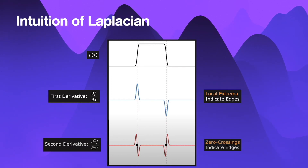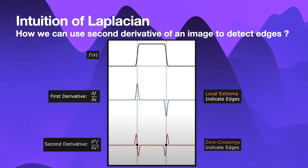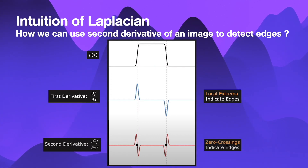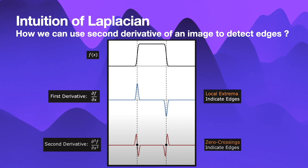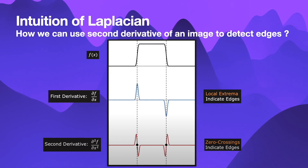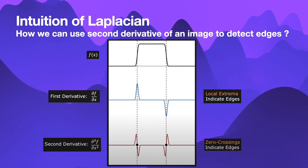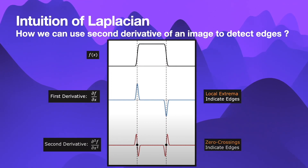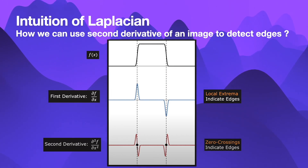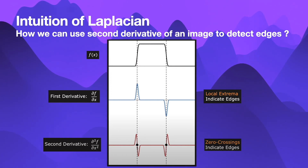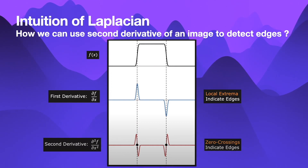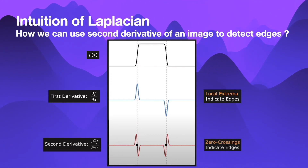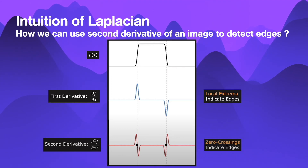Now let's see the intuition of Laplacian — how we can use the second derivative of an image to detect edges. When there are edges in an image there will be a sudden change in intensity values at those points. Taking a function f(x) where there is a sudden change — an edge — applying the first derivative gives an impulse function. Applying the derivative again to this impulse function gives the function in plot 3, where we can observe a zero crossing. Hence, at the edge in an image, the second derivative shows a zero crossing, and we use this property to detect edges using the Laplacian operator.